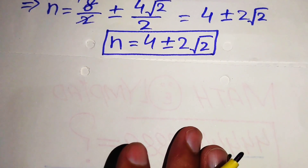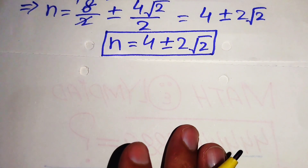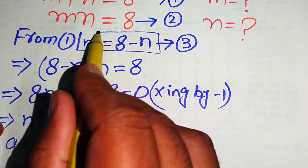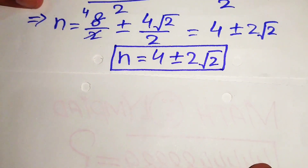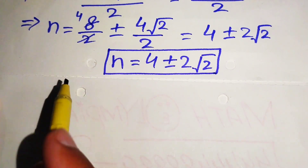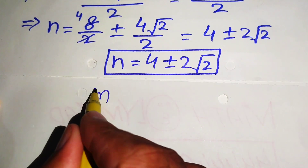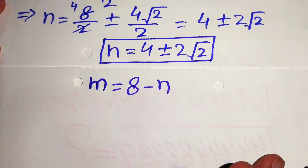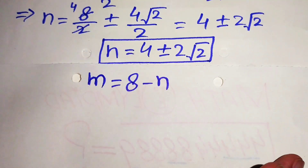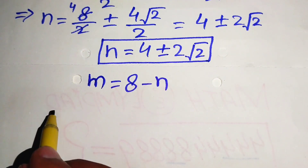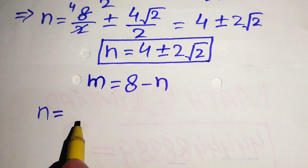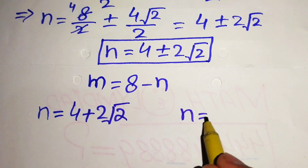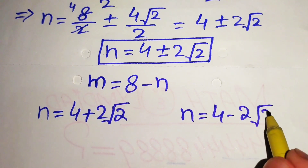To find the value of m, we copy down equation number three: m equals 8 minus n. We have two values of n, so we write them separately. The positive value is n equals 4 plus 2 root 2, and the negative value is n equals 4 minus 2 root 2.